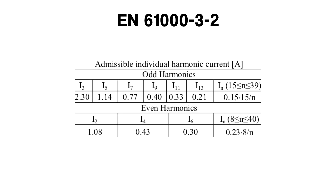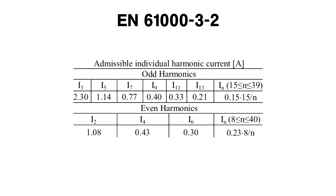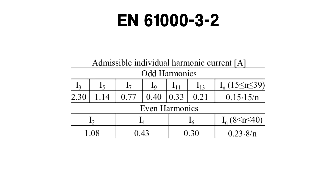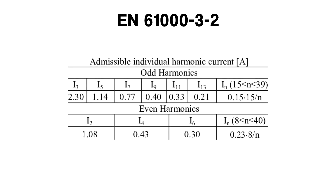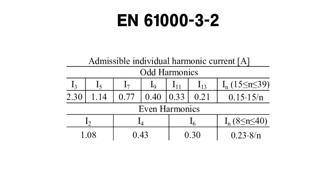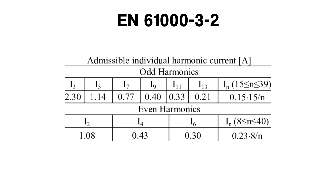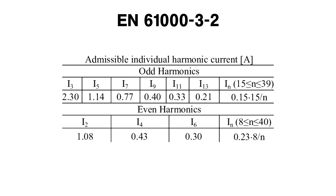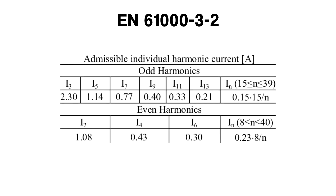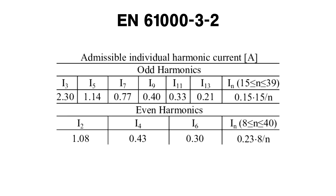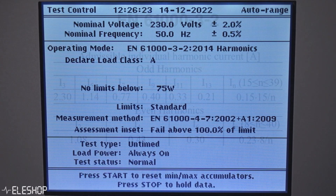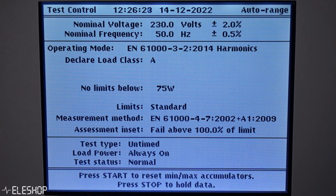The EN61000-3-2 is an international standard that limits mains voltage distortion by prescribing a maximum value for harmonic currents from the second harmonic up to and including the fortieth harmonic current. The EN61000-3-2 aims to set limits to the harmonic currents drawn by electrical devices so the voltage quality from the mains can be maintained. The EN61000-3-2 is also one of the compliance measurements you can conduct with the power analyzer.